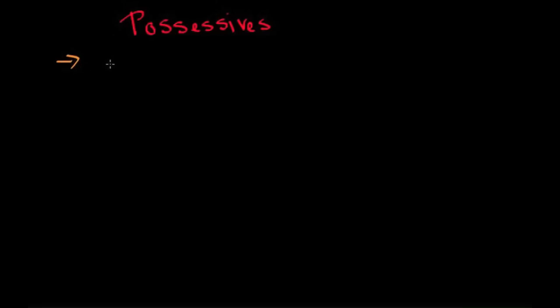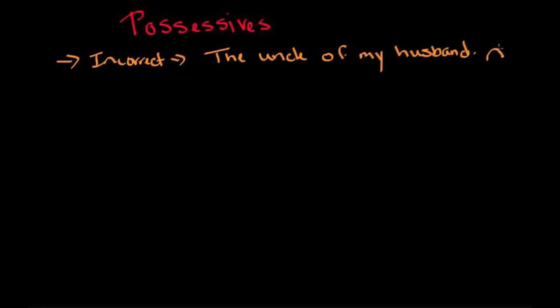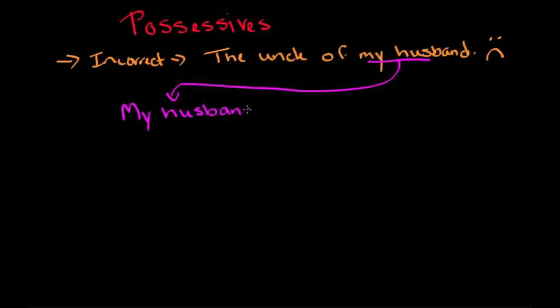First we're going to start with the order of possessions. I'm going to give you an example of something that's incorrect. So here's an example of an incorrect possession. We say the uncle of my husband. This is incorrect to say it this way. So how we need to do it is we need to say my husband's uncle passed away.